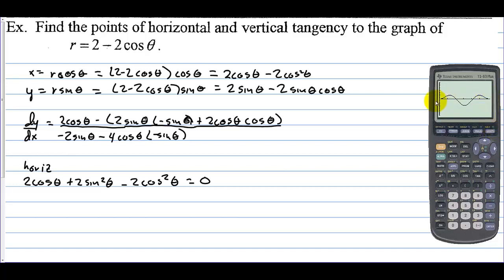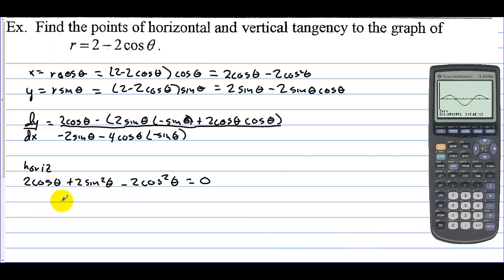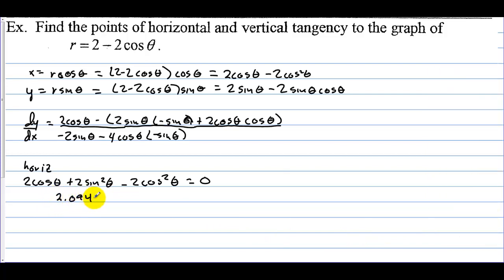We actually have four places where the graph is 0: at 0, 2 pi, and two more in the middle. Using the calculate zero function, we arrow to the left of the first zero, enter, go to the right, enter, and make a guess. We get a theta value of approximately 2.094.